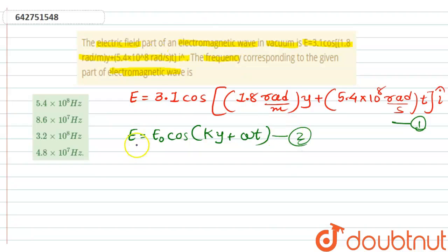Now we have to find frequency. For finding frequency we have the formula f = ω/2π. Now after comparing both equations we will get ω = 5.4 × 10^8.